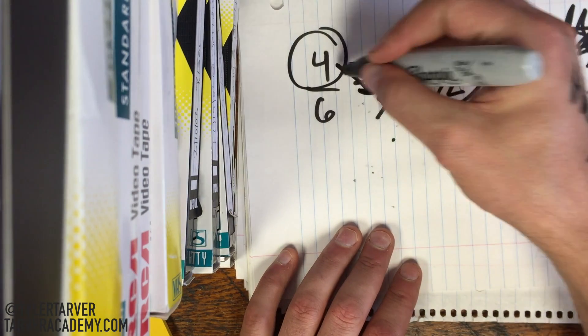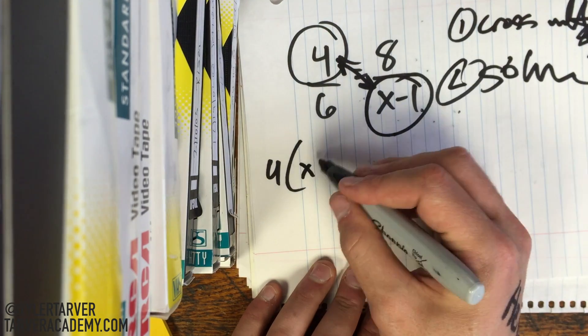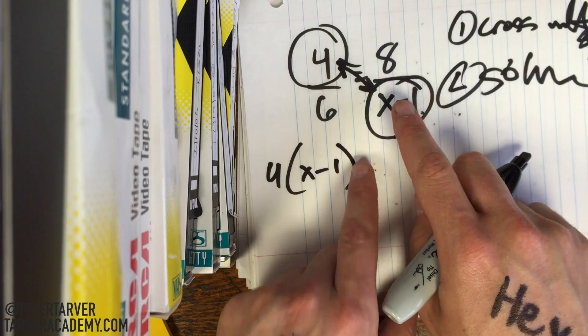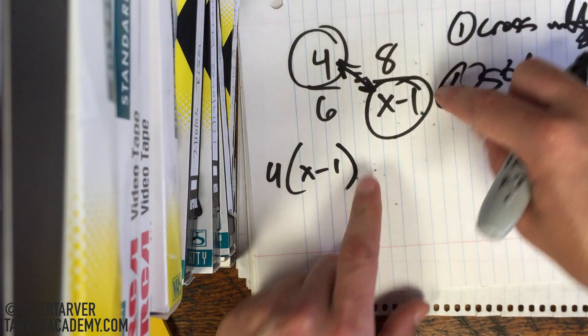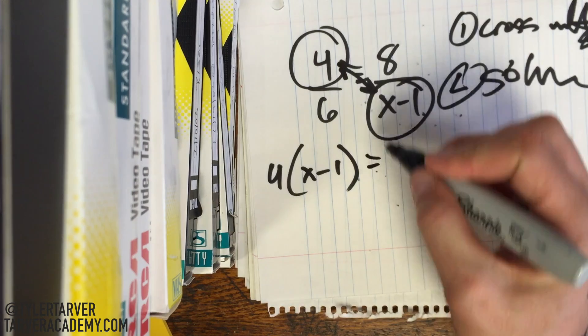So we take up here, we go across and multiply, so it'll be 4 times x minus 1. A lot of people will mess up here, they'll just do 4x minus 1. You're multiplying it times the whole thing, alright? Put our equal sign in.